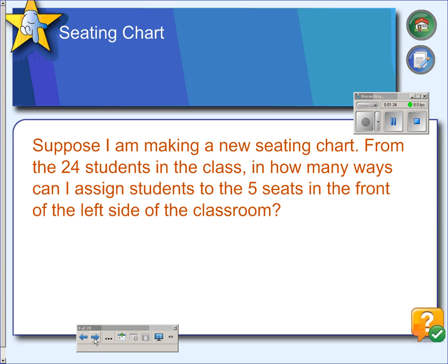So 12P5 is 95,040. Suppose I'm making a new seating chart from the 24 students in the class, how many ways can I arrange five students to sit in the first five seats on the left-hand side? I would do 24P5.